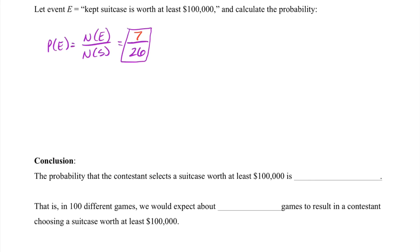Drawing our conclusion, the probability that the contestant selects a suitcase worth at least $100,000 is about 26.9%. That is, in 100 different games, we would expect about 27 games to result in a contestant choosing a suitcase worth at least $100,000.